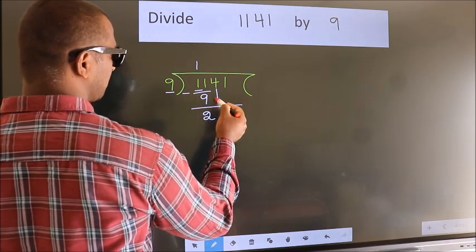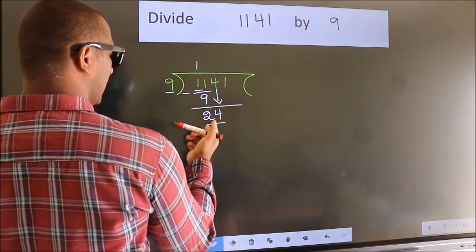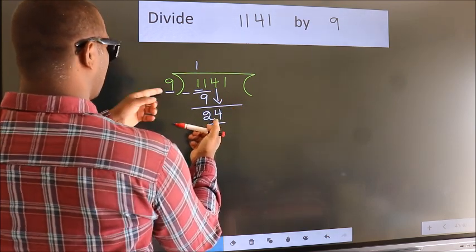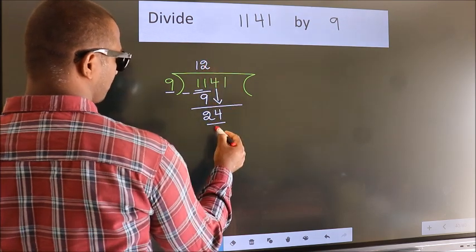We get 2. After this, bring down the beside number. So 4 down. So 24. A number close to 24 in the 9 table is 9 times 2 equals 18.